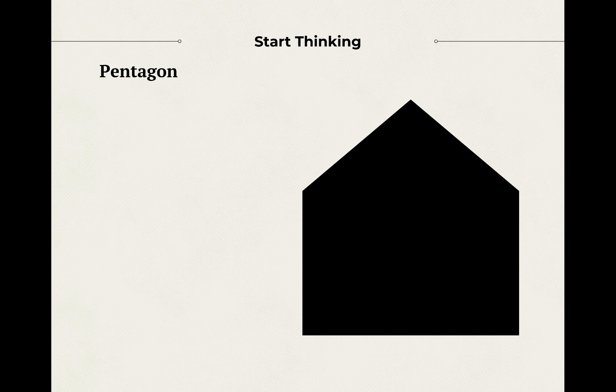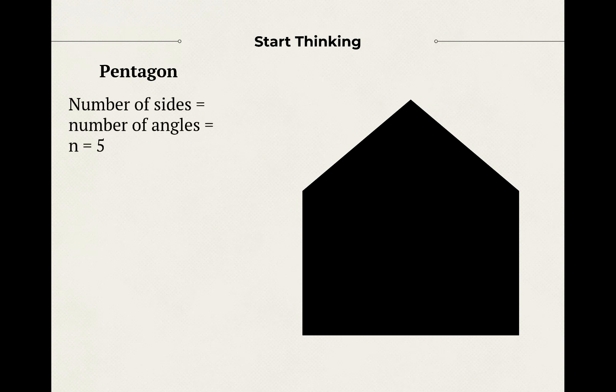Let's start thinking — you're going to think through this entire lesson and figure it out on your own. I'm just going to guide you through it. We start off with this pentagon. A pentagon is what? Five sides — penta means five. So we know the number of sides equals the number of angles, n equals five.